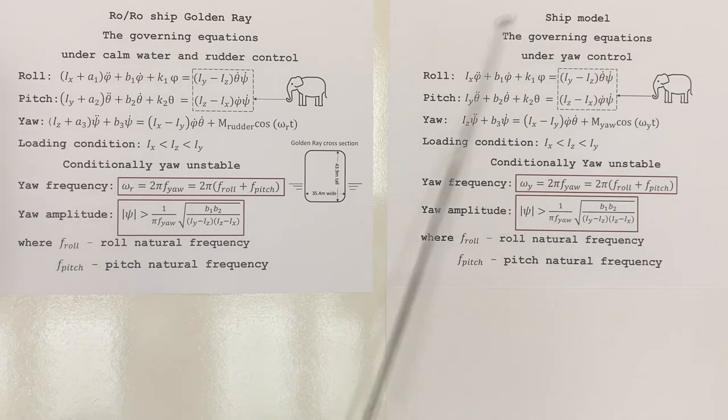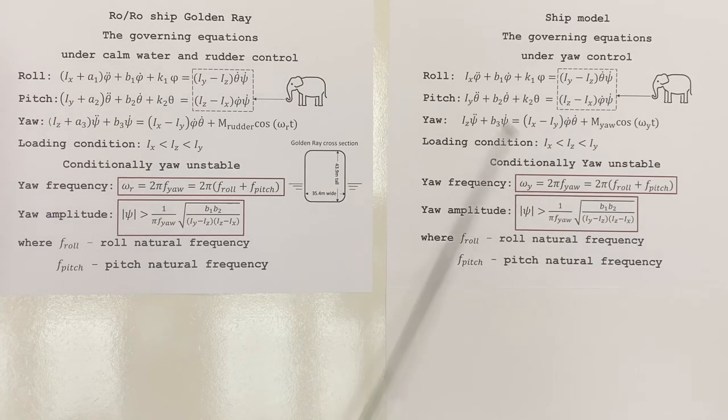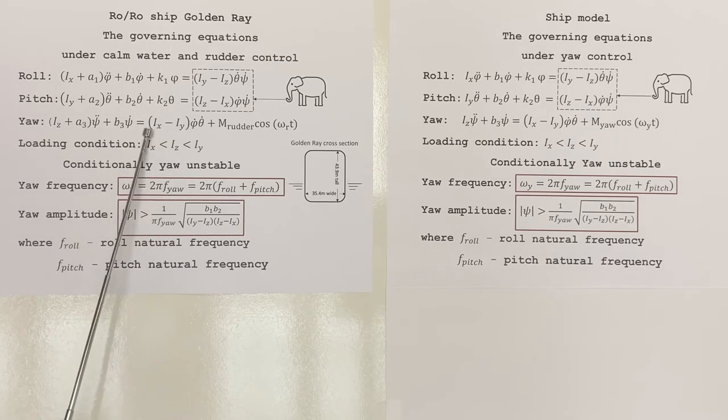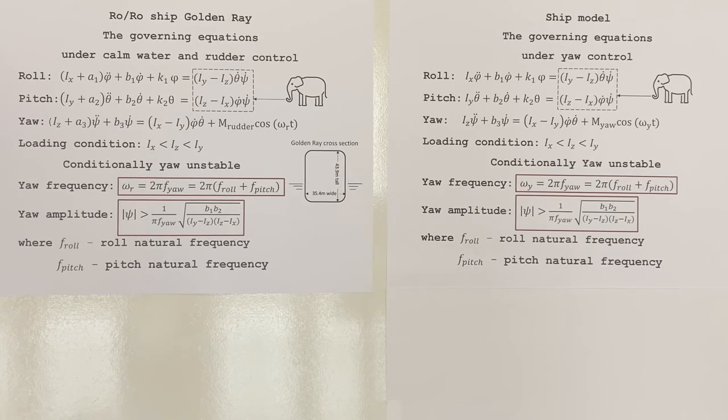So these are the governing equations for that ship model. Similar to Golden Ray, there are no external loads in roll and pitch directions. The only external load is from my hand in yaw direction. This term represents the load from my hand. These equations are almost identical with the governing equations for Golden Ray, except that Golden Ray has added masses, represented here by A₁, A₂, A₃, because Golden Ray was in water while this ship model isn't.